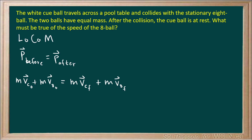Now let's fill in what we know. Initially, the eight ball is stationary, so its initial velocity is zero, and that term drops out of the equation. After the collision, the cue ball is at rest, so its final velocity is also zero, and we can eliminate that term as well. This leaves us with the mass of the cue ball times its initial velocity equal to the mass of the eight ball times its final velocity.